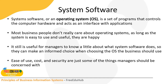System software performs common computer hardware functions: it provides a user interface, provides a degree of hardware independence, manages system memory, manages processing tasks, provides networking capability, and controls panel system resources. There is also a kernel — the heart of the operating system — which controls the most critical processes. The main hardware functions include getting input from keyboard or mouse, retrieving data from disk, storing data on disk, and displaying information on the monitor.